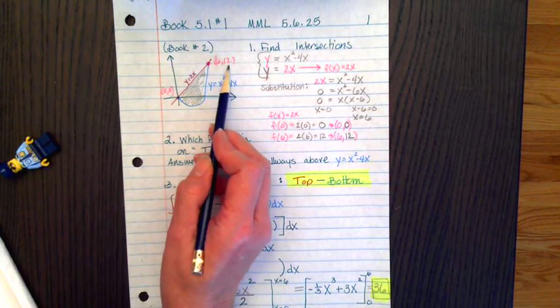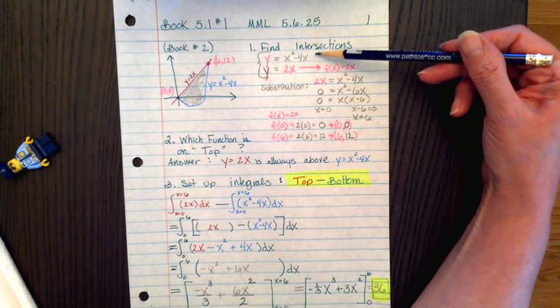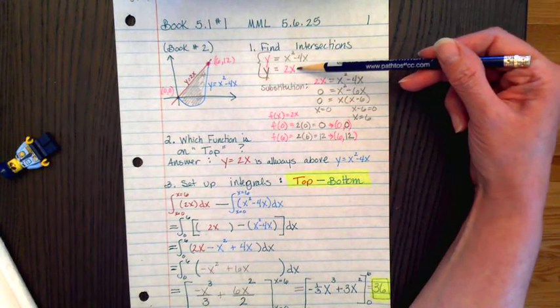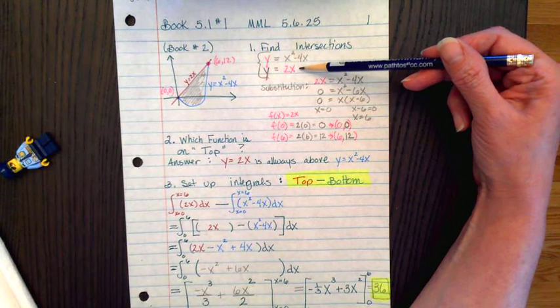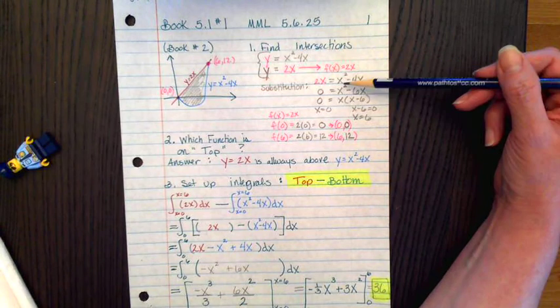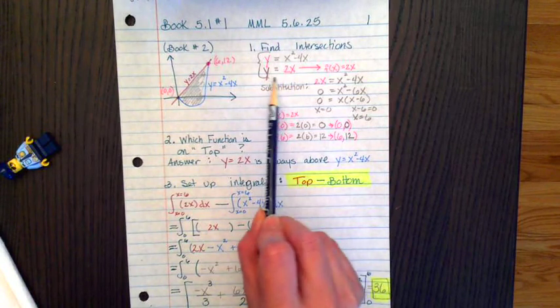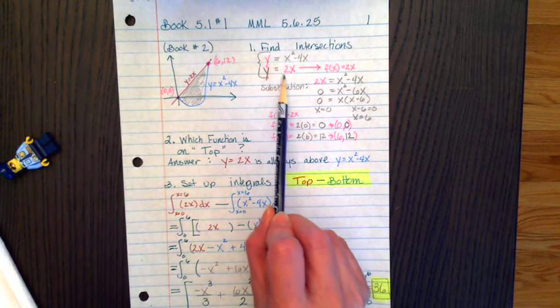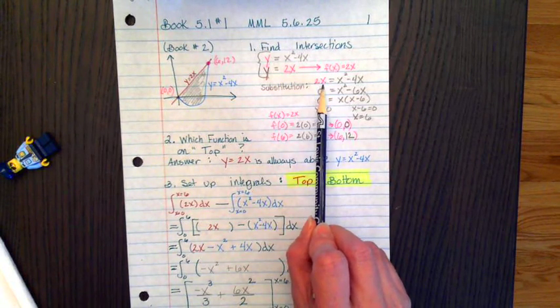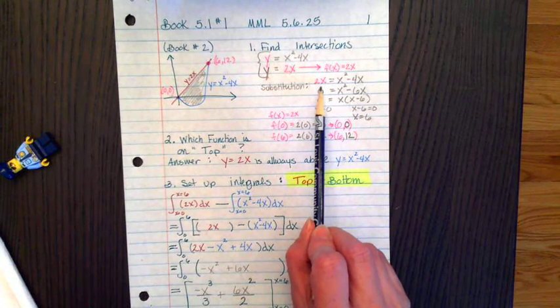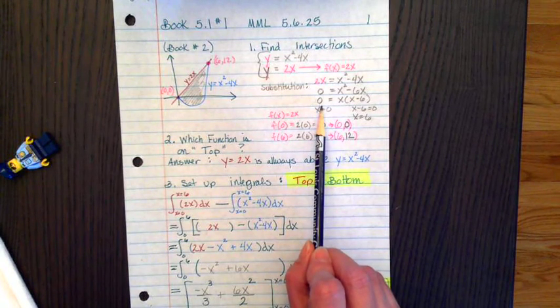But let me walk you through how to find those algebraically. If we have these two functions, y equals x squared minus 4x and y equals 2x, we use our precalculus algebra to solve the system of equations. We could use the substitution method. If we replace y with 2x, we get 2x equals x squared minus 4x. In solving that for x, we get a quadratic equation.